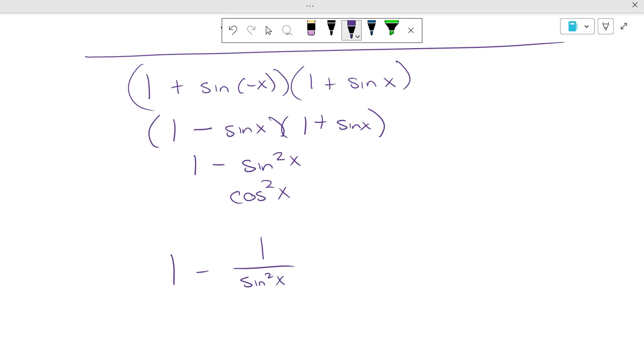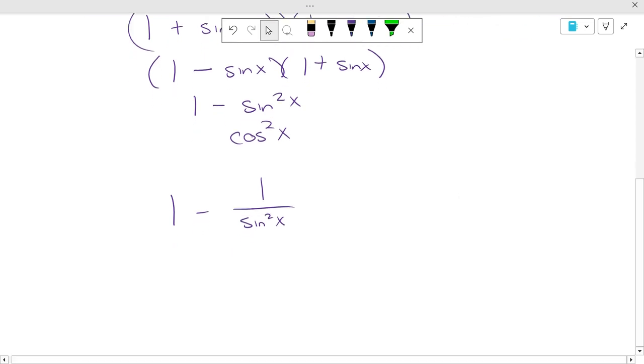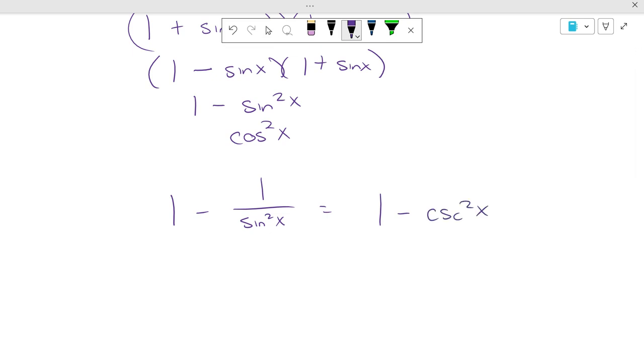When you see a fraction with sines and cosines, sometimes you have to think outside the box a little bit. Now, more than one way to do this. We could get a common denominator. Or, thinking outside the box, what's 1 over sine the same as? Cosecant squared of x. Do we have a Pythagorean identity that's like that?